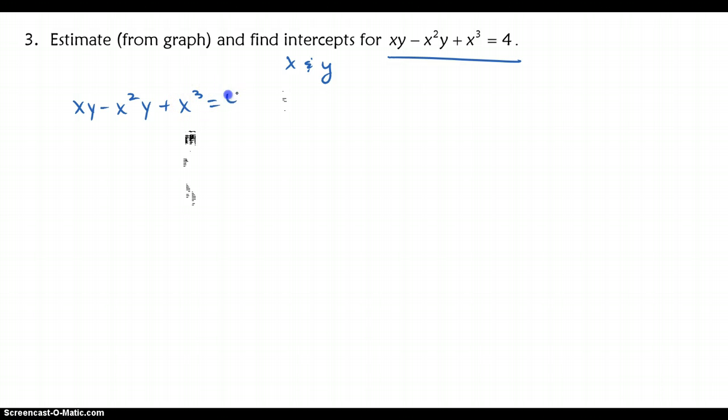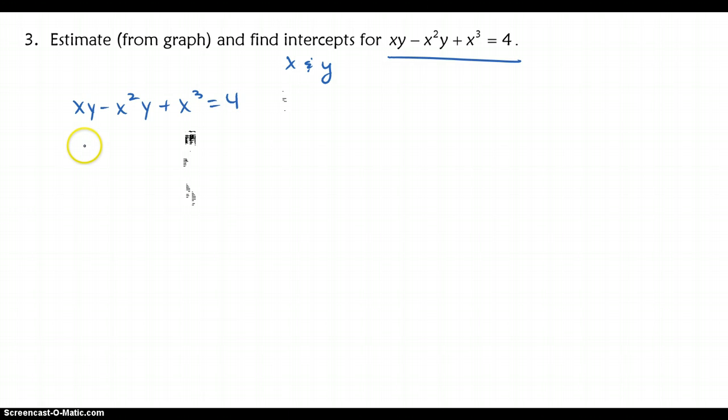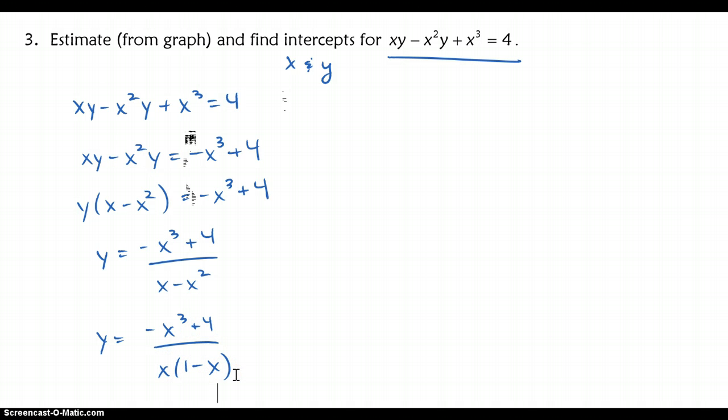If you want to pause it here, you can. So again, I'm going to do the work as well, but maybe you should try ahead of time and see if you can find the correct answer. So let's move, since we're trying to get the y by itself, let's move the x cubed term over to the other side. Let's go ahead now and factor out that y. Let's divide out that x minus x squared term. And then I'm actually going to rewrite this as x times 1 minus x. Okay, so now you're ready to put that into your calculator.